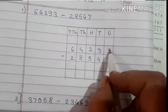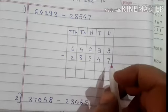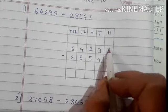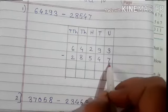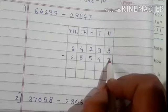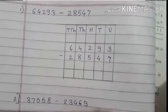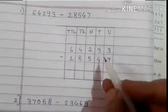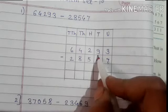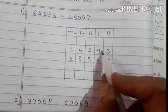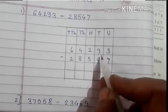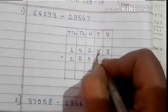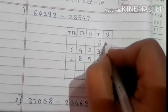Start from unit place. Here we have 3 minus 7. Now is 3 minus 7 possible? No, because 3 is smaller than 7. So from 3 we cannot subtract 7. In this case, when the upper number is small, we have to borrow 1 from the neighboring number. The neighbor is 9, so we borrow 1 from 9. This 9 converts into 8, and this 3 converts into 13.